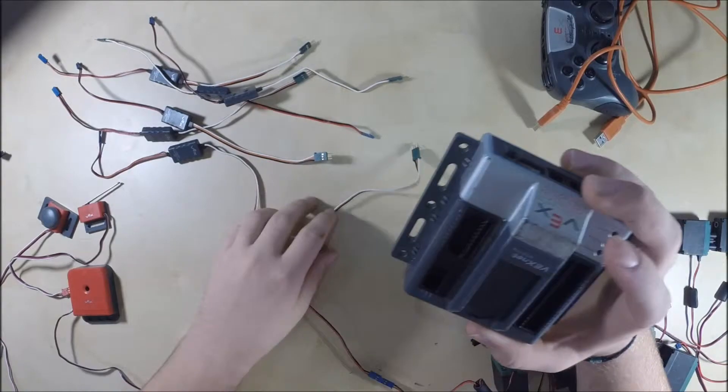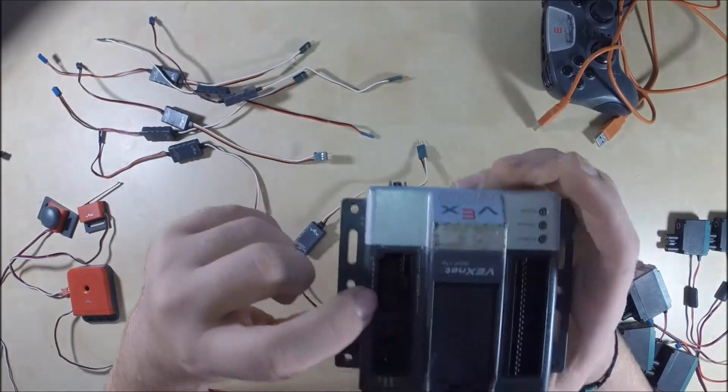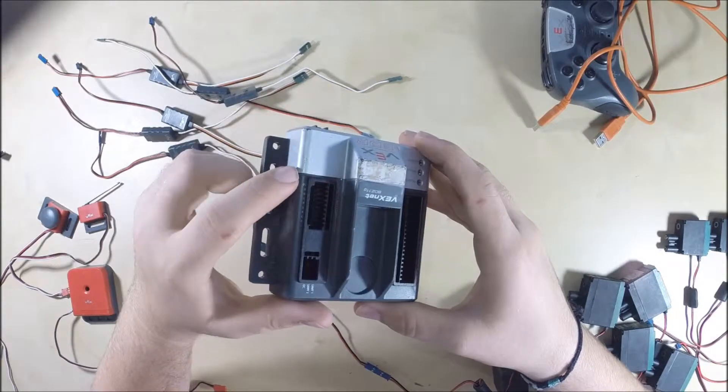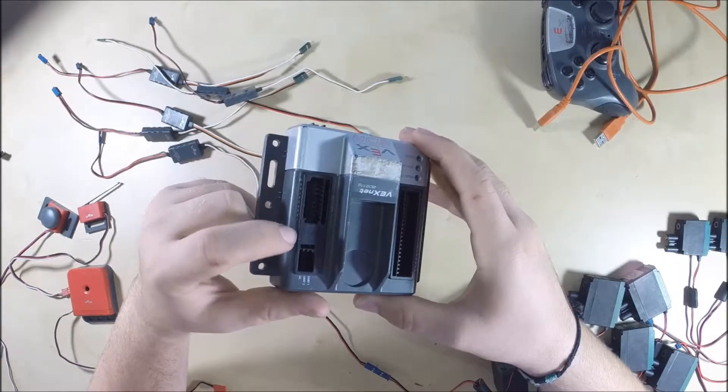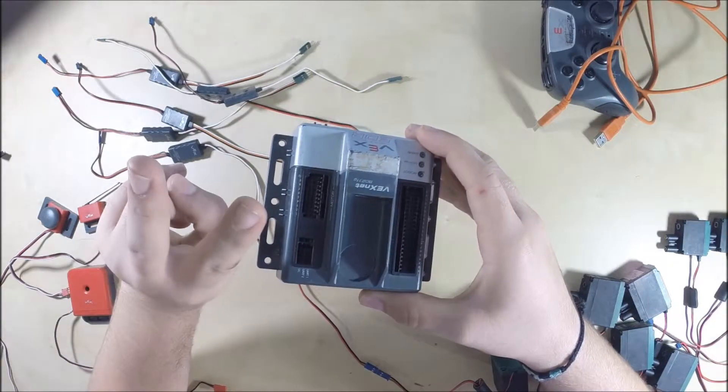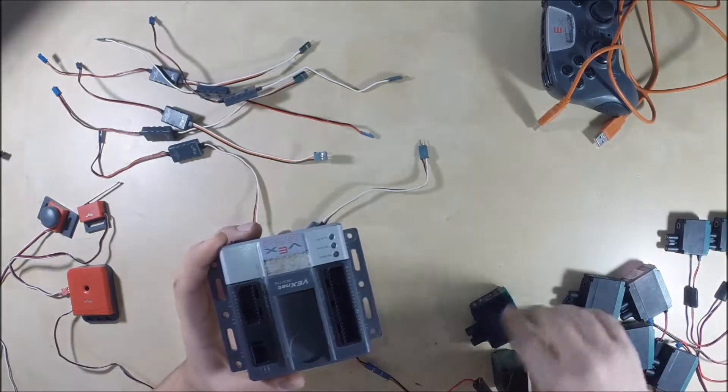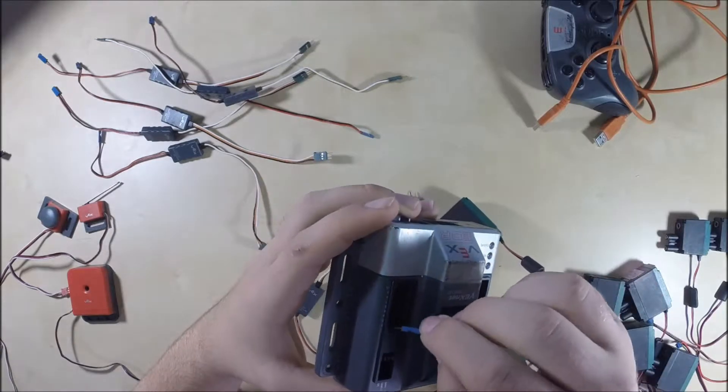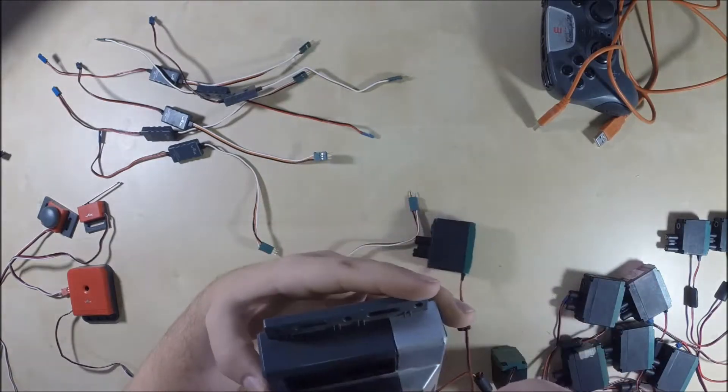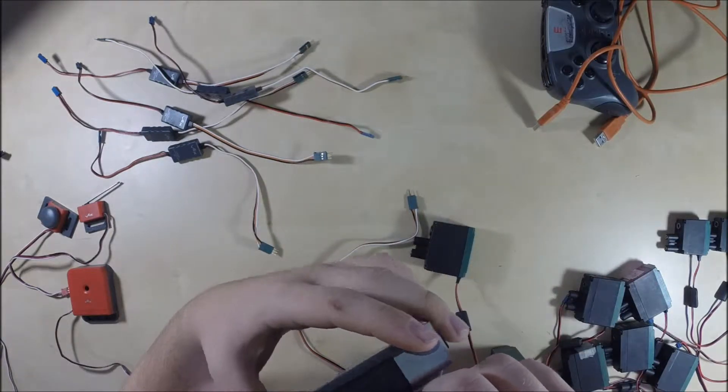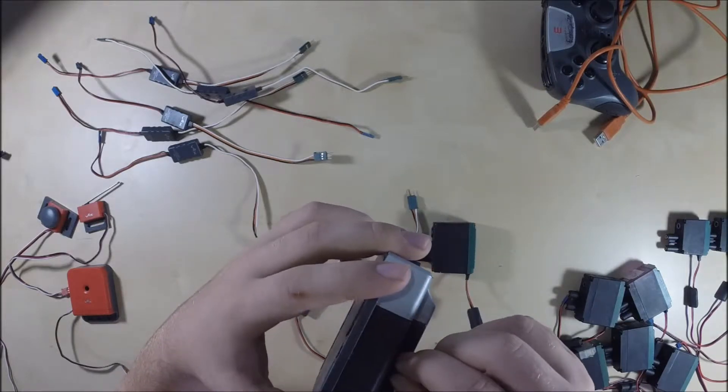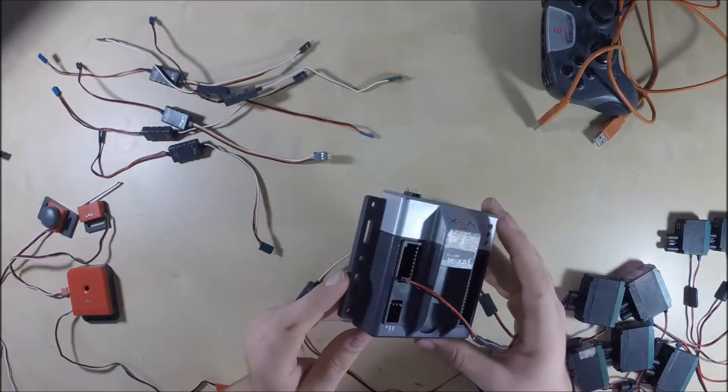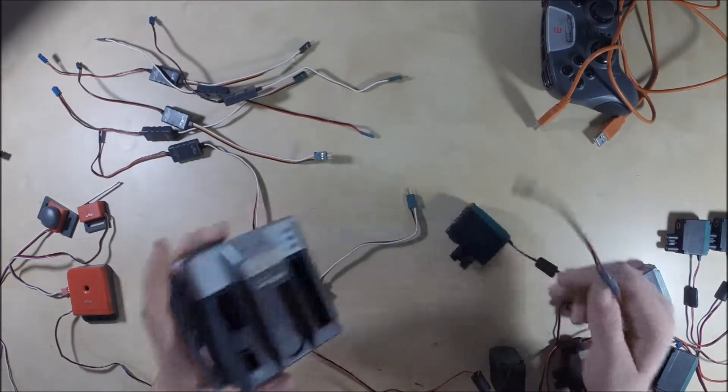And actually, only eight of the ports need that converter because number ten and number one accept two-wire motors. So if your motors are fairly close, you could take your two-wire motor and plug it directly into the cortex in slot one or in slot ten just like that. But that will get done in a separate video.